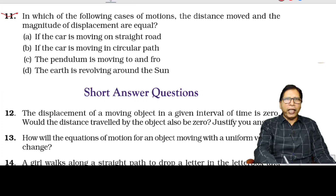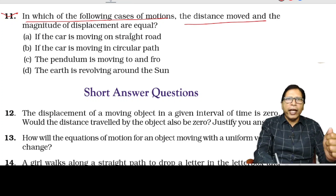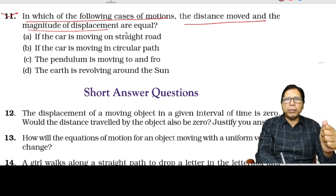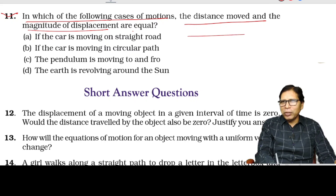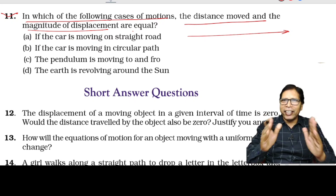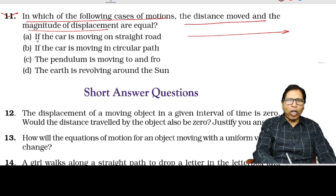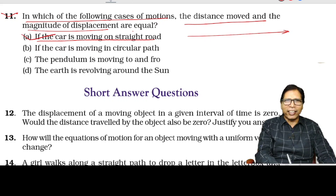Question number 11: in which case of motion are the distance moved and the magnitude of displacement equal? If an object moves in a straight line path in the same direction, then distance and displacement are equal. Option A — a car moving on a straight road — is correct.